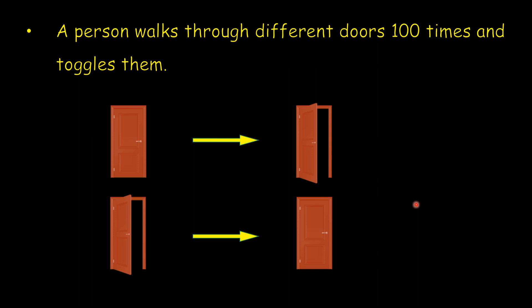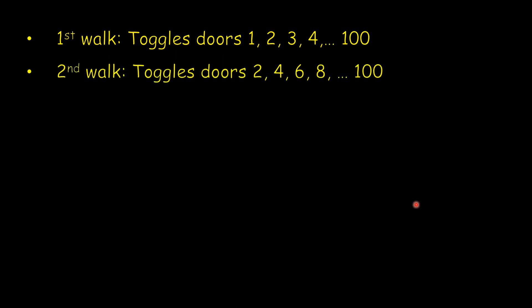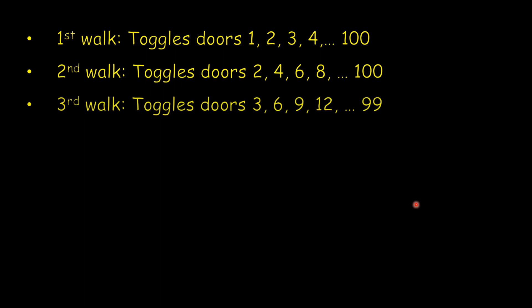In the first walk, he toggles all the doors — he goes through doors 1, 2, 3, 4 all the way up to 100. In the second walk, he toggles alternate doors: 2, 4, 6, 8 all the way up to 100, that is multiples of 2. In the third walk, he walks through the doors whose numbers are multiples of 3: 3, 6, 9, 12 all the way up to 99.